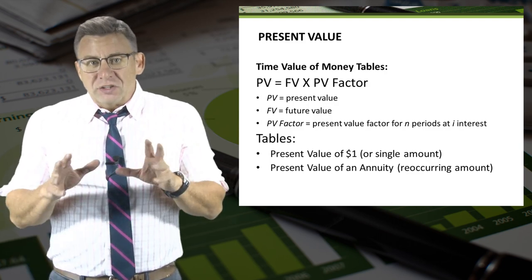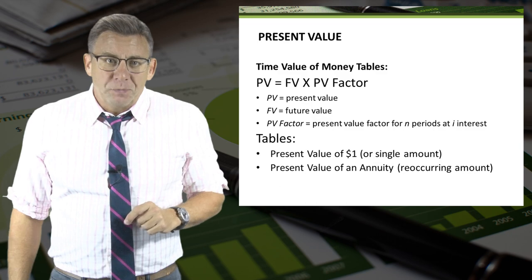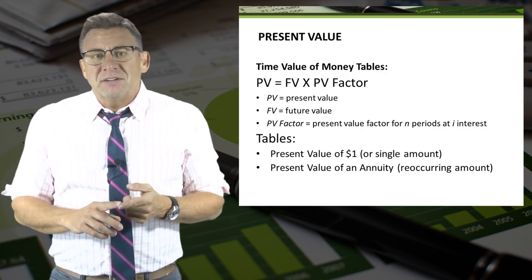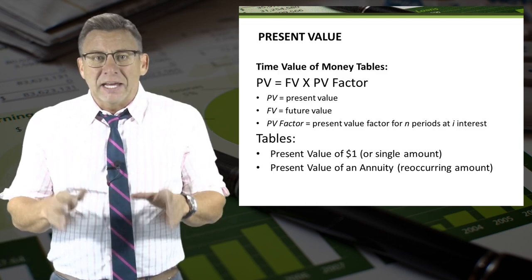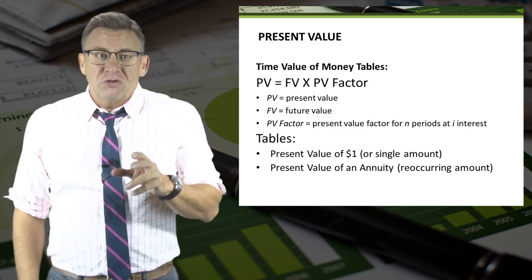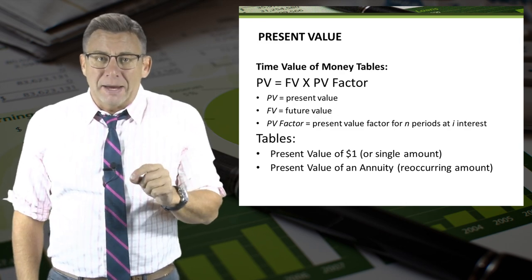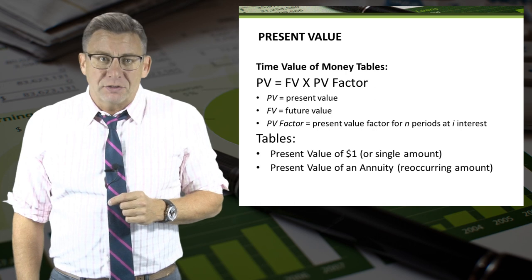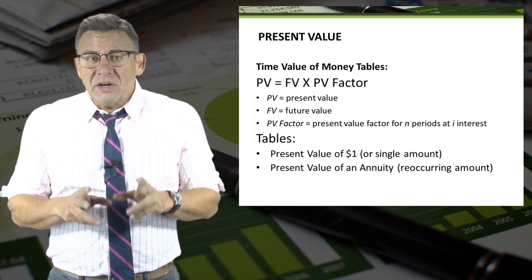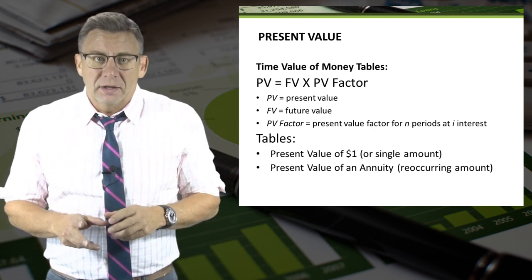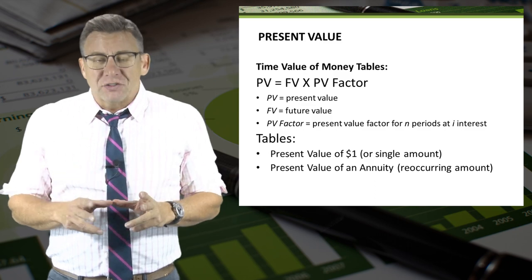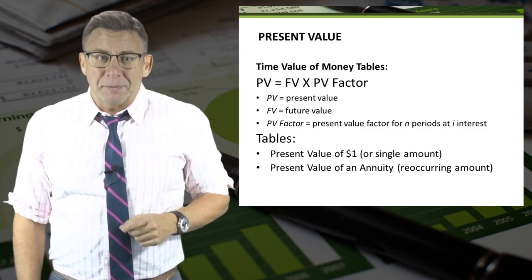There are two tables we will learn about in this video. The first is a present value of a dollar, or sometimes called a single amount. This is used when we have a one-time, non-recurring amount. The other is the present value of an annuity. This is for amounts that are recurring, like annual interest payments.